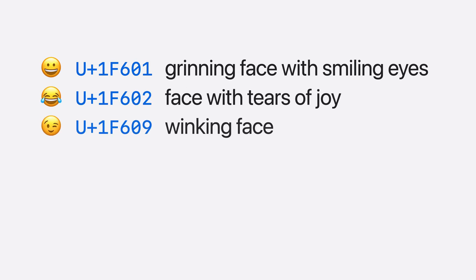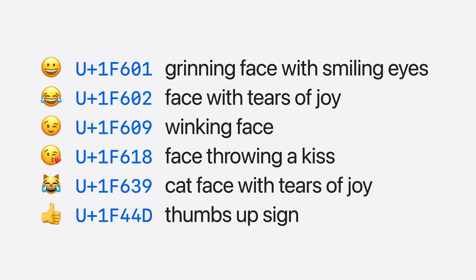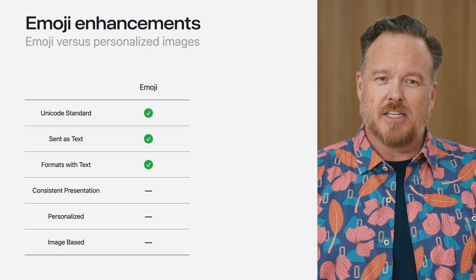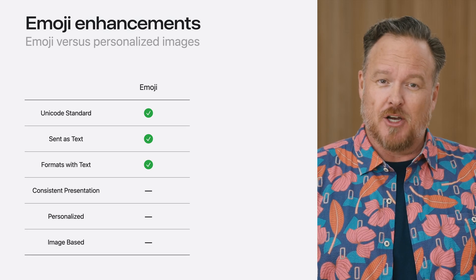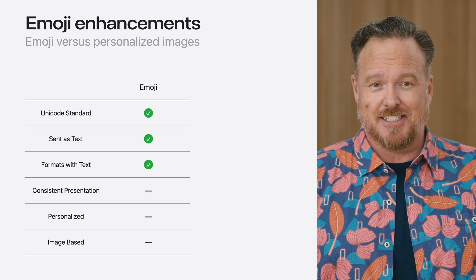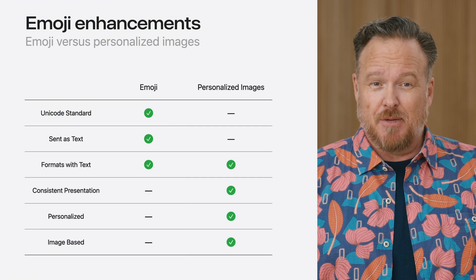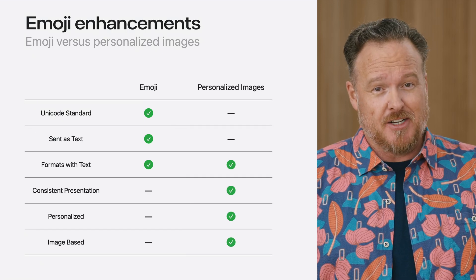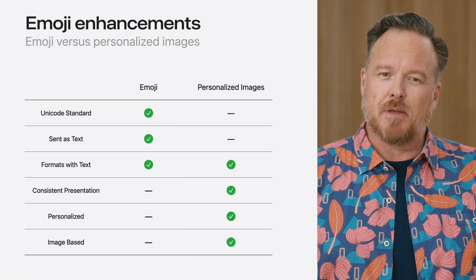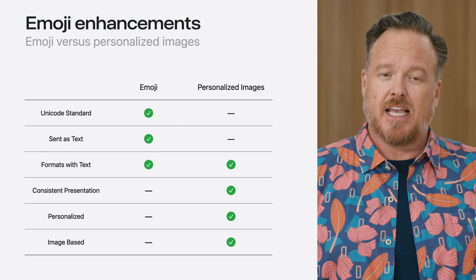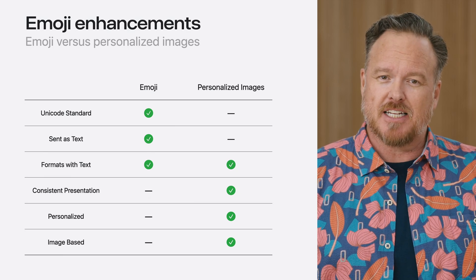Now, I know what some of you are thinking. Traditional emoji aren't actually images, but are instead a standardized list of Unicode characters sent as plain text, and it's up to the viewing device to render the appropriate image in its own font, just like any other text content. Personalized images like Genmoji, on the other hand, are unique rasterized bitmaps that can't be described by a Unicode text character.